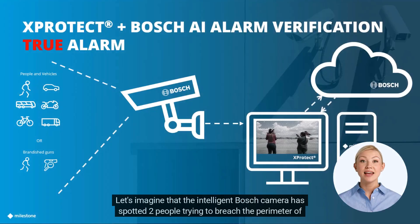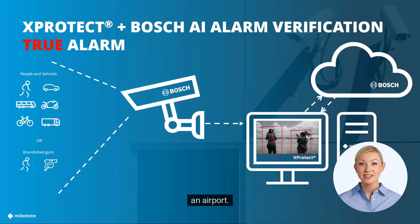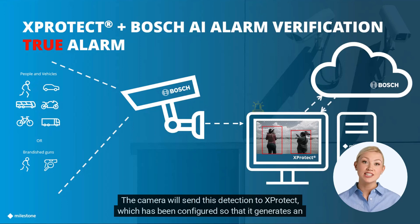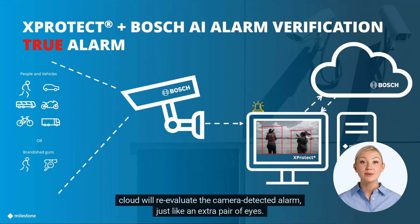Let's imagine that the intelligent Bosch camera has spotted two people trying to breach the perimeter of an airport. The camera will send this detection to XProtect, which has been configured so that it generates an alarm. But before warning the operator, this alarm is now put on hold and the integrated Bosch verification cloud will re-evaluate the camera detected alarm, just like an extra pair of eyes.